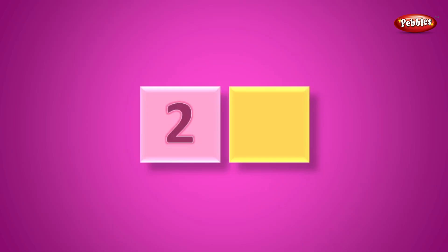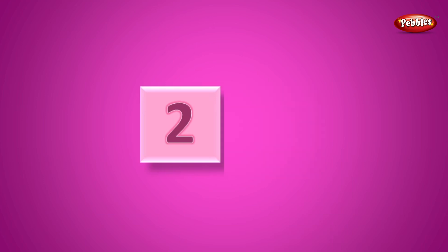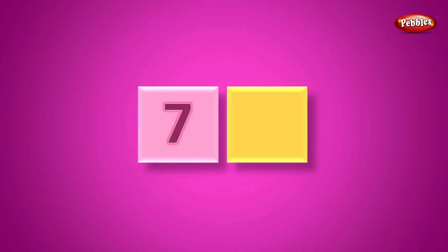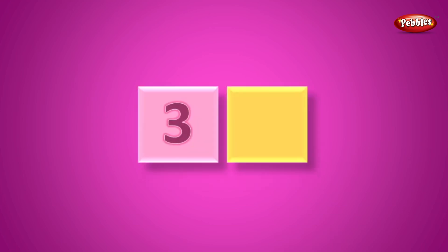Look at the first box. Number 2. After number 2 is 3. 3 is the right answer. Look at the first box. What is the number? 7. After 7 is number 8. 8 is the right answer.